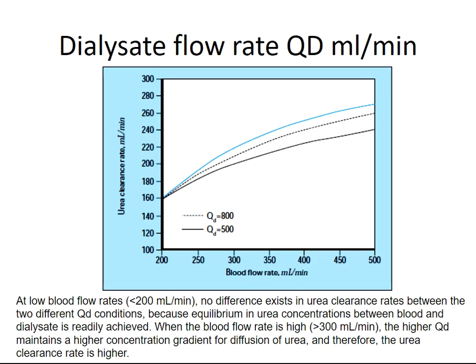Dialysate flow rate can improve clearance at blood flow rates below 200 mL/min. No difference exists between dialysate flow rate and blood flow rate in urea clearance at low flows, because equilibrium in urea concentration between blood and dialysate is readily achieved. When blood flow rate is high — above 300 mL/min — a higher Qd maintains a higher concentration gradient for diffusion of urea, and therefore the urea clearance rate is higher.